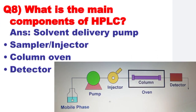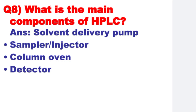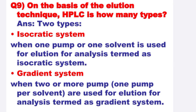Next: What are the main components of HPLC? Basically, HPLC consists of four components: Number 1, solvent delivery pump. Number 2, sampler or injector. Number 3, column oven. Number 4, detector. Next: On the basis of the elution technique, HPLC is of two types. Number 1, isocratic system — when one pump or one solvent is used for elution for analysis, it is termed as isocratic system. Number 2, gradient system — when two or more pumps are used for elution for analysis, it is termed as gradient system.